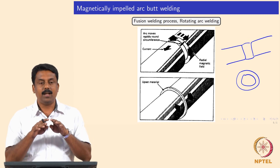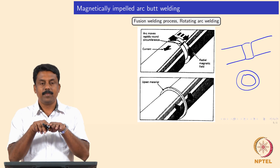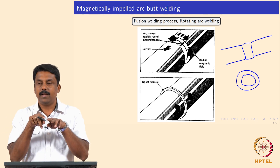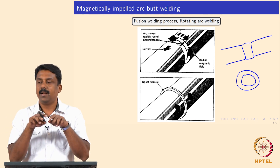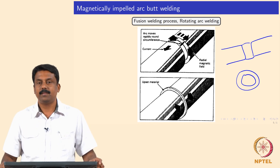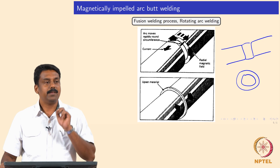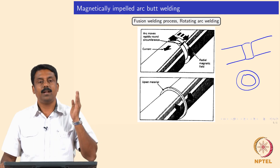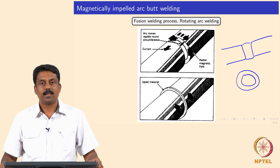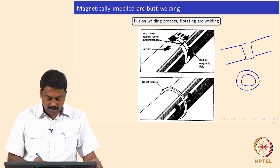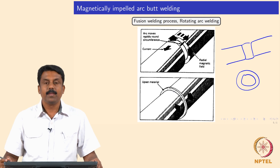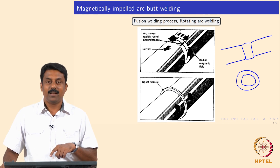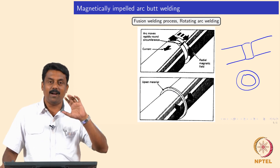How is it done in flash butt? We strike an arc, maintain some gap, melt, and then do an upsetting. The molten material goes as a flash and then the solid regions mechanically deform and coalesce to form a joint. The same happens here. The only advantage is we can achieve large thick cross-section welds by making sure the arc is impelled through the cross-section and through the thickness. The upset material can then be removed and we are going to get this equipment in a month's time.